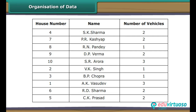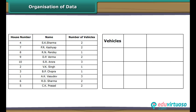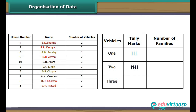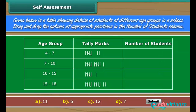Now count the tally marks against every stream and record it under number of students. Let us now organise the RWA data. Make three columns: vehicles, tally marks, and number of families. Specify one, two and three under vehicles one by one. Under tally marks, denote families with specific number of vehicles by tally marks against appropriate options. Now count the tally marks against every option and record it under number of families. Self-assessment: attempt this question to test your understanding of tally marks. Drag and drop the option at the appropriate position in the number of students column.